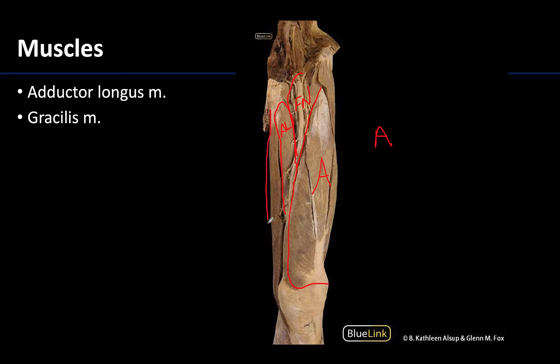The medial-most muscle of the thigh and of this compartment is the gracilis. You can see a bit of the cut sartorius right here, but the medial-most muscle in this compartment is the gracilis, which extends into a similar place as the sartorius. It's named gracilis because it's not a particularly strong muscle — when it contracts it's not making things happen very powerfully — but it always helps me get my bearings in the medial compartment, as it is always the medial-most structure and looks like a long strip running down the medial portion of the thigh.